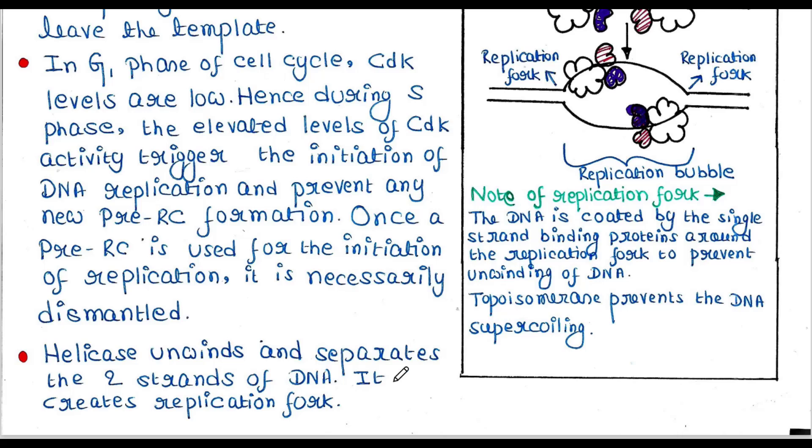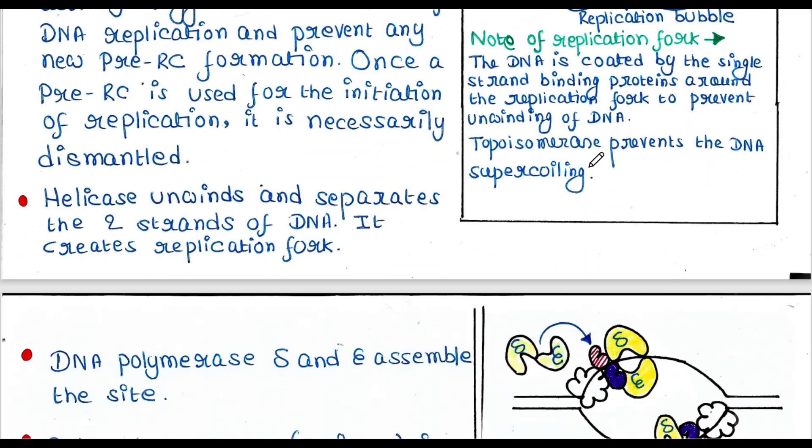Now helicase unwinds and separates the two strands of DNA and creates the replication fork. The DNA is coated by single strand binding proteins around the replication fork to prevent unwinding of DNA, and topoisomerase prevents DNA supercoiling.